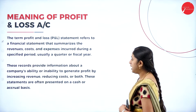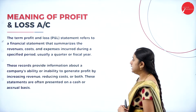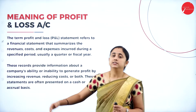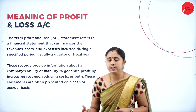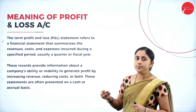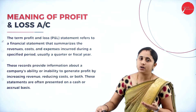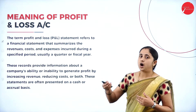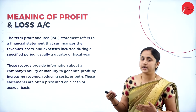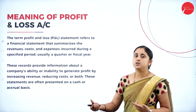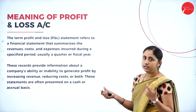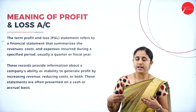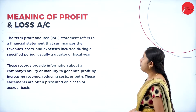The profit and loss account provides information about a company's ability or inability to generate profit by increasing revenue, reducing costs, or both. These statements are often presented on a cash or accrual basis. If revenue is more and expenses are low, it shows the company's ability to generate profit. If costs or expenses are more and revenue is less, the company is running at a loss. The profit and loss account considers all indirect expenses and indirect income to find the net profit or net loss.